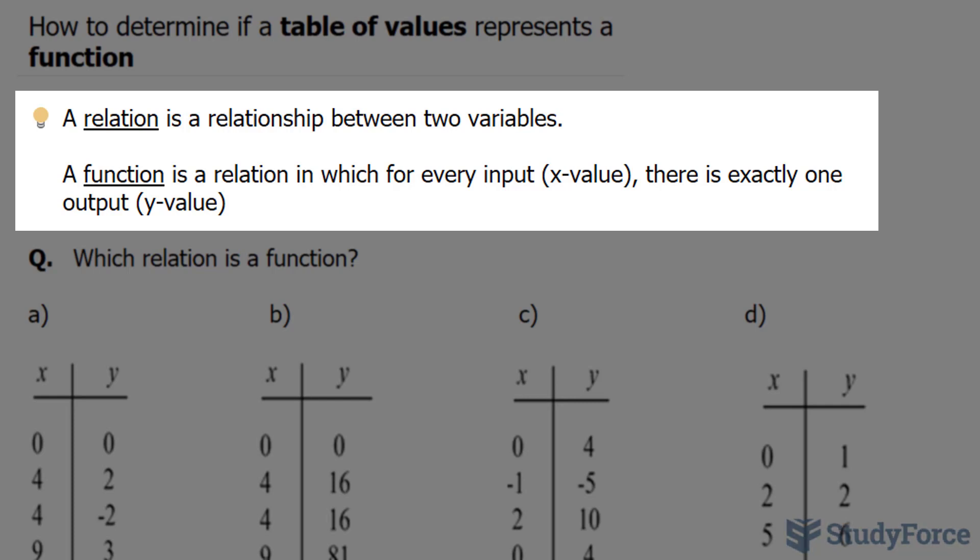which is a relation in which for every input, usually represented as an x value, there is exactly one output, and that's represented by a y value. So this would be your independent variable and your dependent variable.